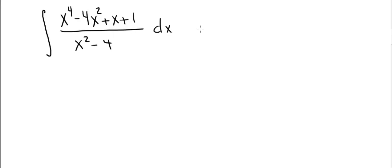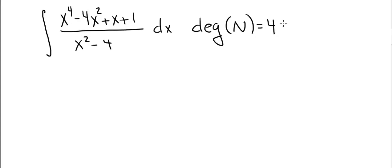In order to use partial fractions, we first have to make sure that the degree of the numerator is strictly less than the degree of the denominator. But in our case, the degree of the numerator is 4, which is bigger than the degree of the denominator, which is equal to 2.